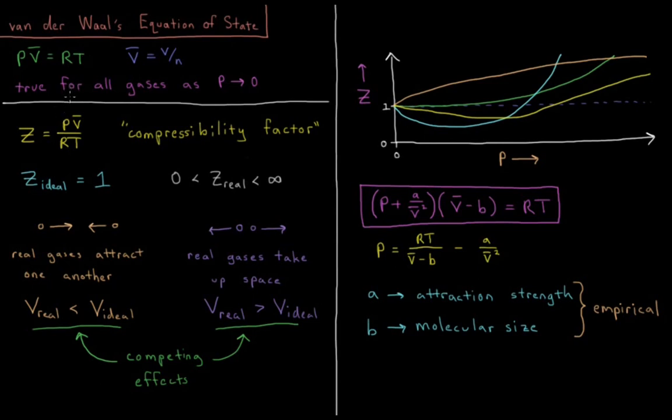We can define this quantity Z, called the compressibility factor. If we take both sides of this equation and divide them by RT, we get PV̄/RT, which for an ideal gas, the compressibility factor is equal to one.